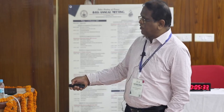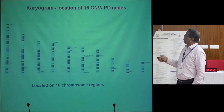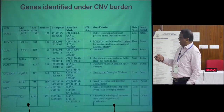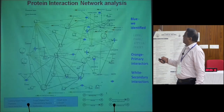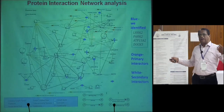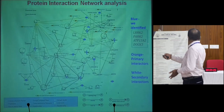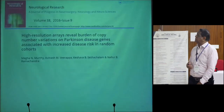We also analyzed CNVs in these 1,715 individuals targeting 220 known Parkinson's disease genes for CNV analysis. We found about 16 CNV-Parkinson's disease genes located across 10 chromosomes. Four major genes are seen repeated across all 12 populations, shown in blue — those are the PD genes where CNV markers were identified — and these 4 major genes were found in the majority of populations where CNV is present.